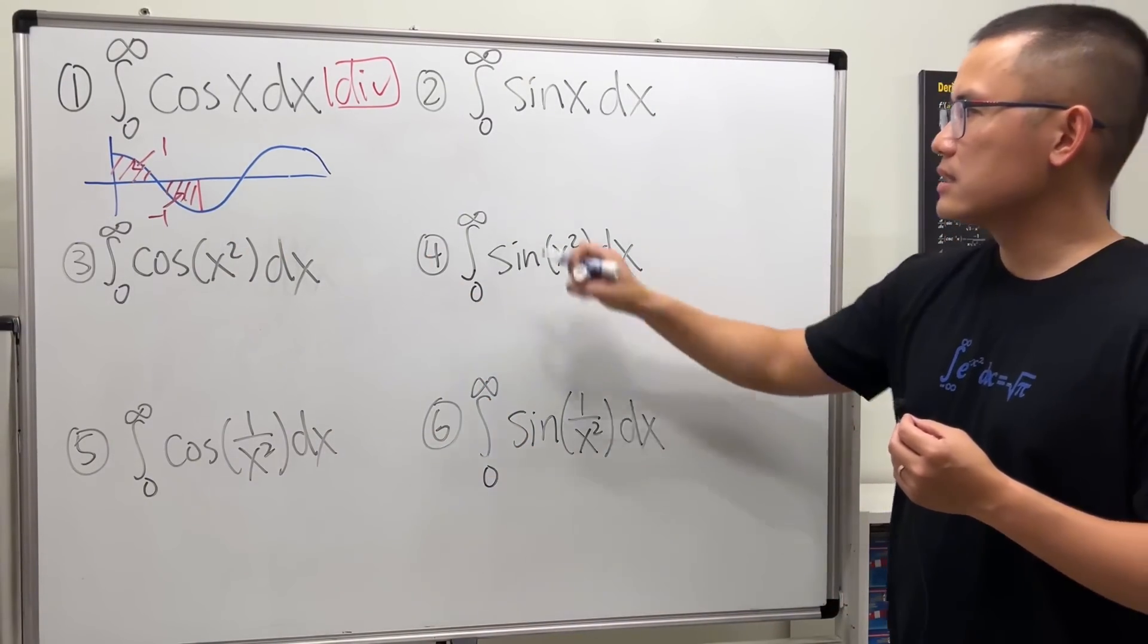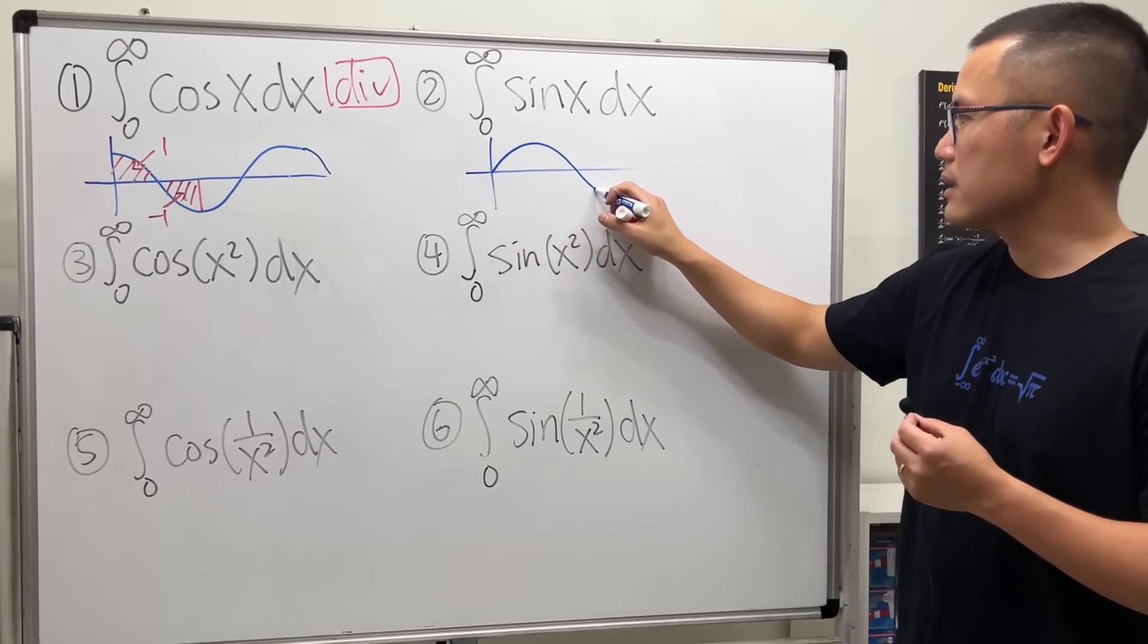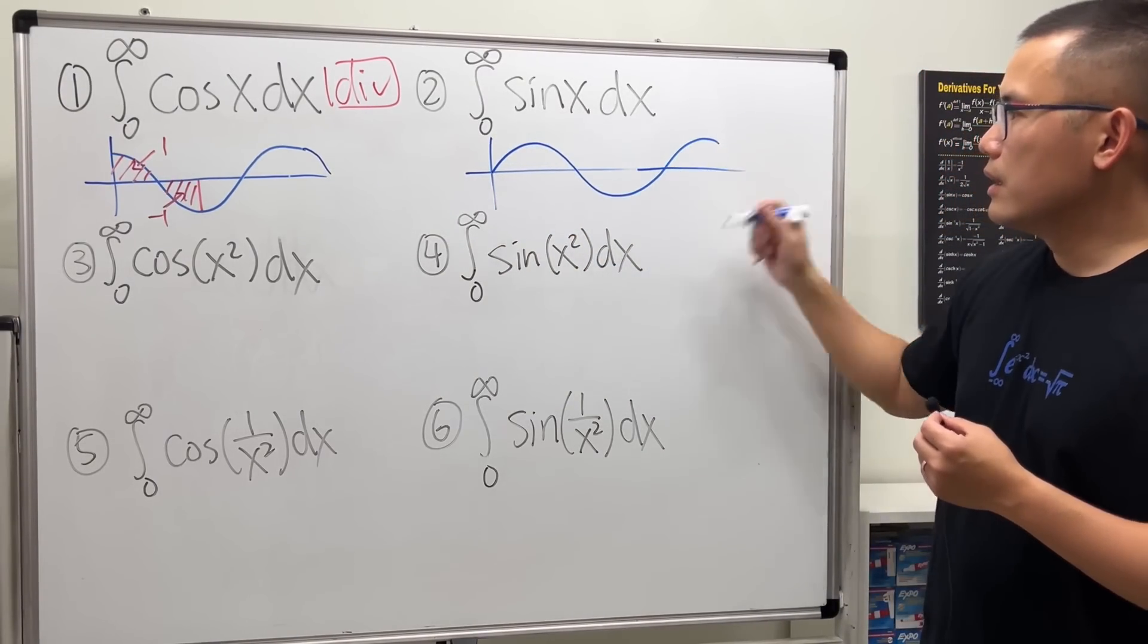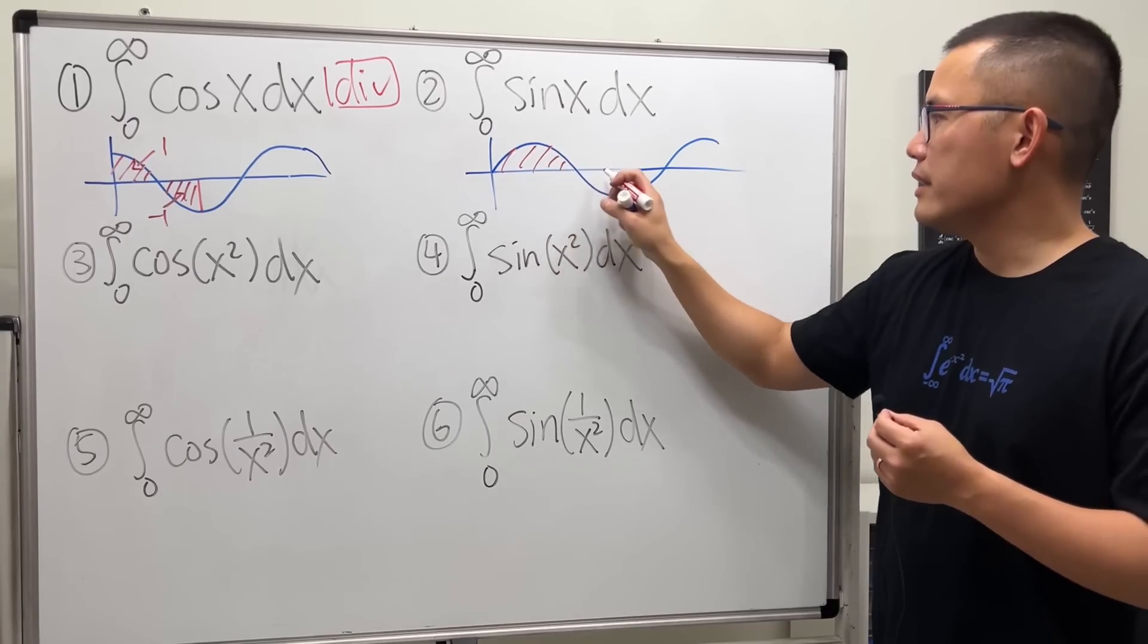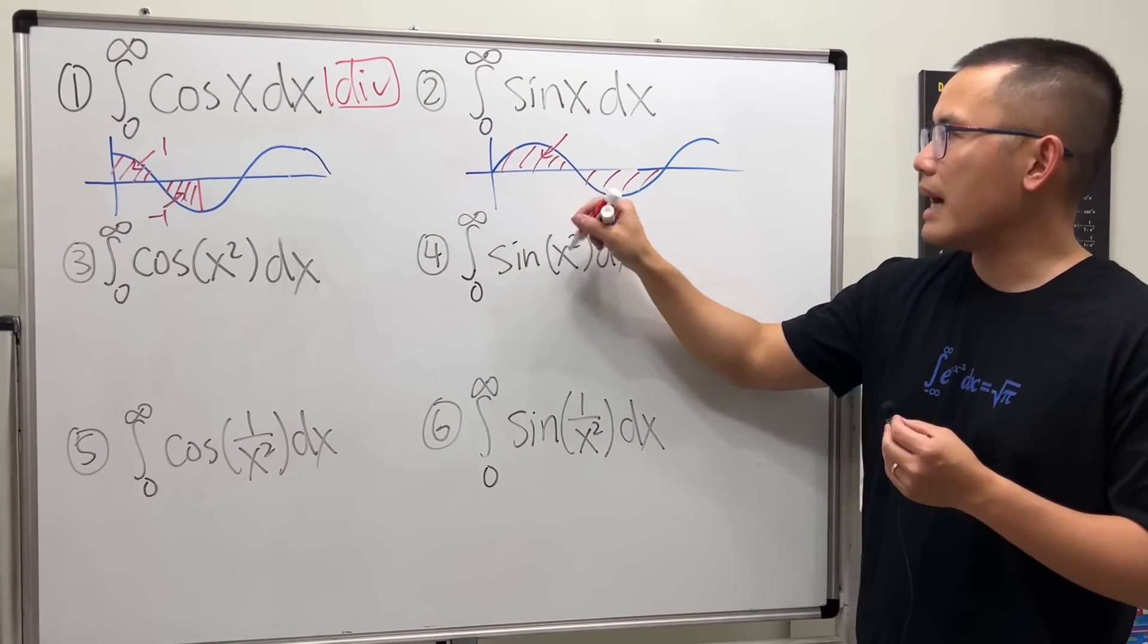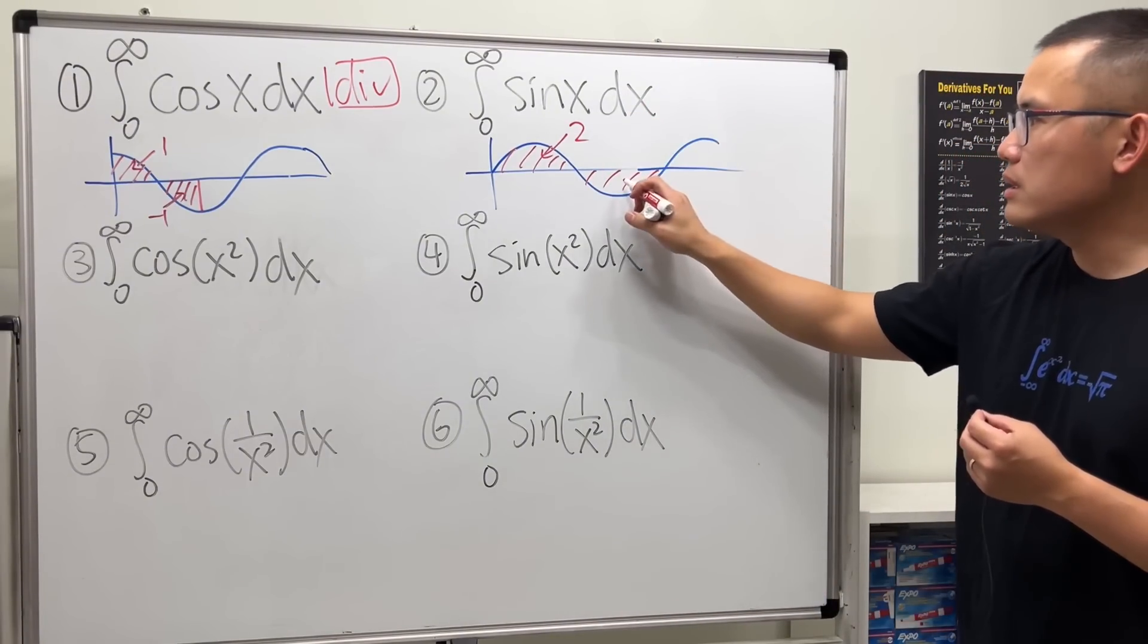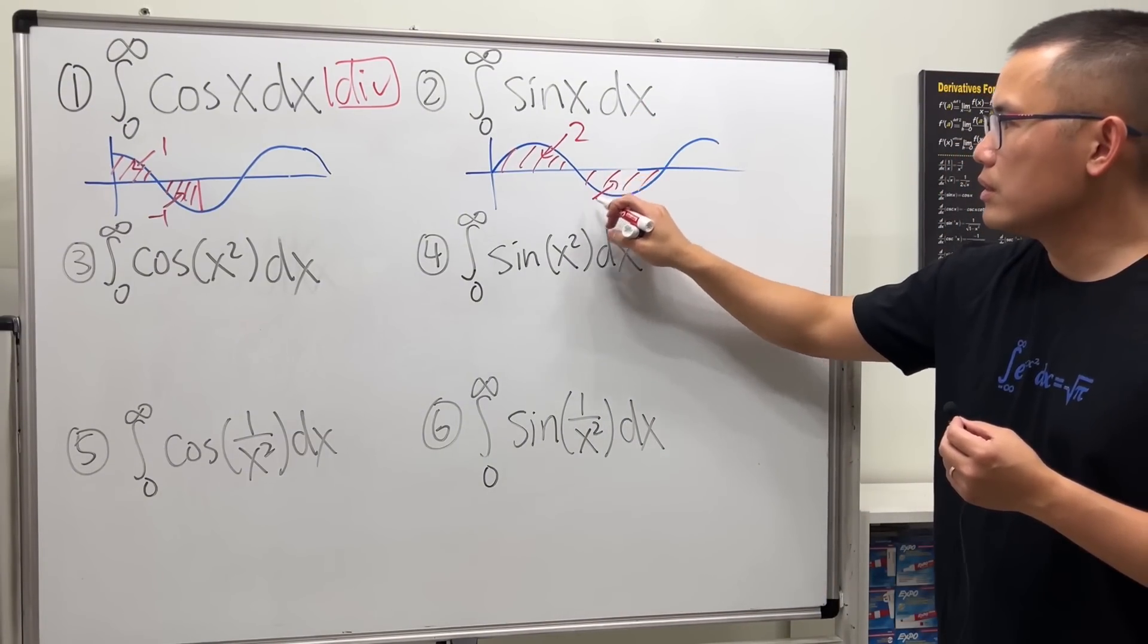Similarly, for sin x, sin starts at 0, 0, and goes out like this. This area and that area are equal. I will tell you, if you integrate from 0 to pi, you end up with 2. But once you go down below here, this is going to be negative 2.